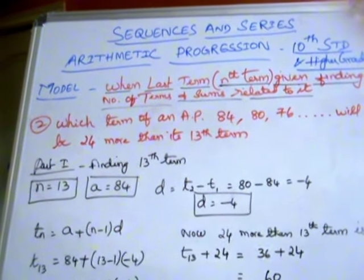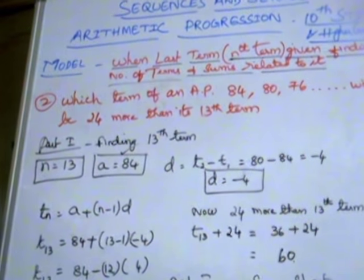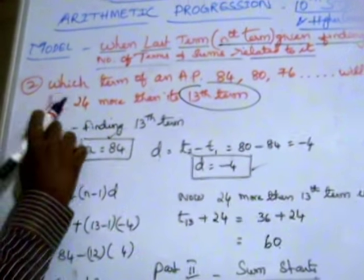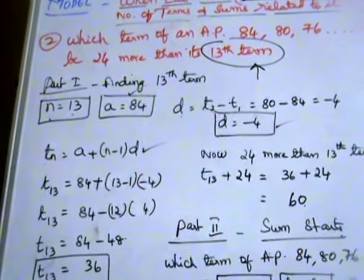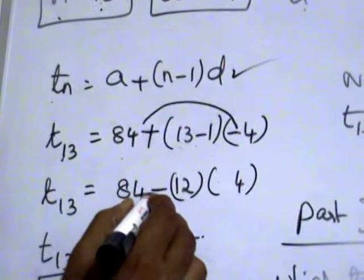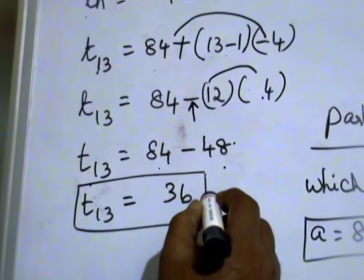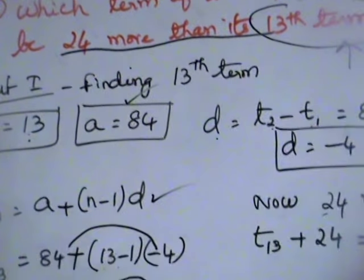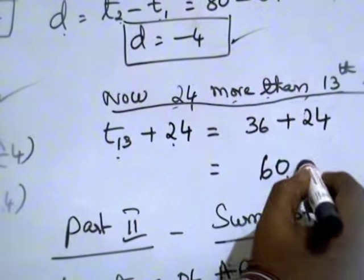Now we will see one more sum. This is a decreasing sequence, so D will be negative. A is 84, and D is T2 minus T1 = minus 4. First, find the 13th term — that's Part 1. TN = A + (N−1)×D, so T13 = 84 + (13−1)×(−4) = 84 − 48 = 36. We want 24 more than the 13th term: T13 + 24 = 36 + 24 = 60.